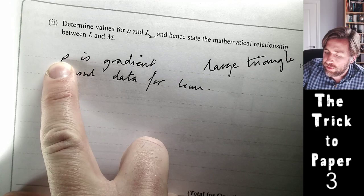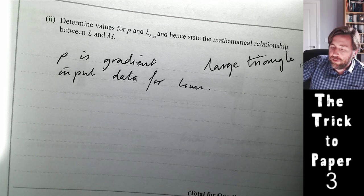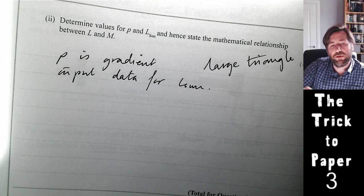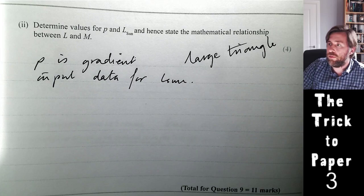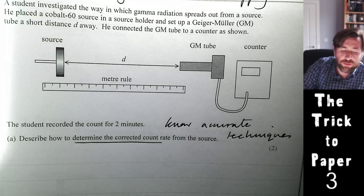Once you've determined p from the gradient, you input any data point back into the original equation to work out the luminosity L₀ of the Sun. Dr. Lemon's trick means you're maximizing marks without being distracted by the context about main sequence stars. You're not blinded by context — you're reading to think: how do I get the most marks? What do I need to do, and what information do I have?